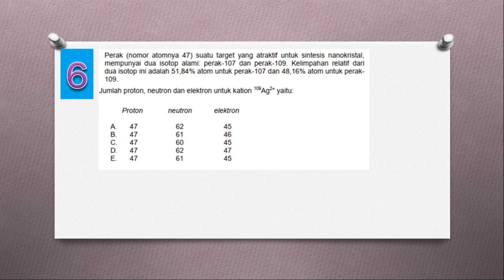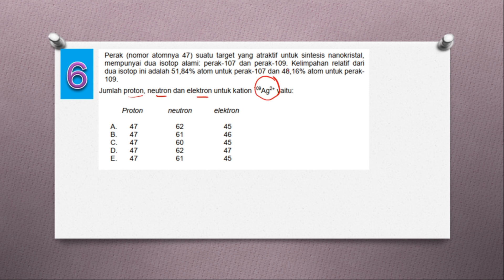Kita lanjut ke soal nomor 6. Perak nomor atomnya 47, suatu target yang atraktif untuk sintesis nanokristal, mempunyai 2 isotop alami: perak 107 dan perak 109. Kelimpahan relatif dari 2 isotop ini adalah 51,84% untuk perak 107 dan 48,16% untuk perak 109. Jumlah proton, neutron, dan elektron untuk kation Ag2+ ditanyakan. Nomor massanya 109, nomor atomnya 47.